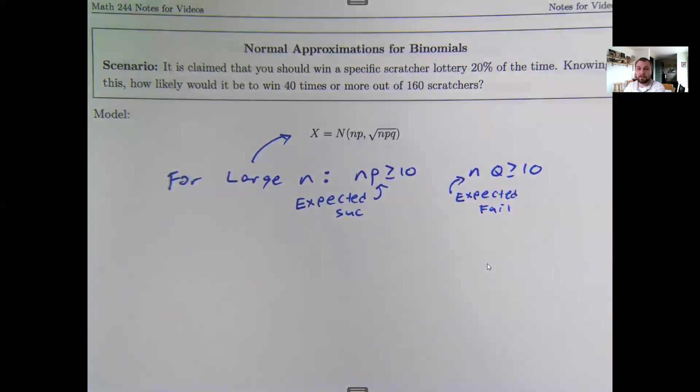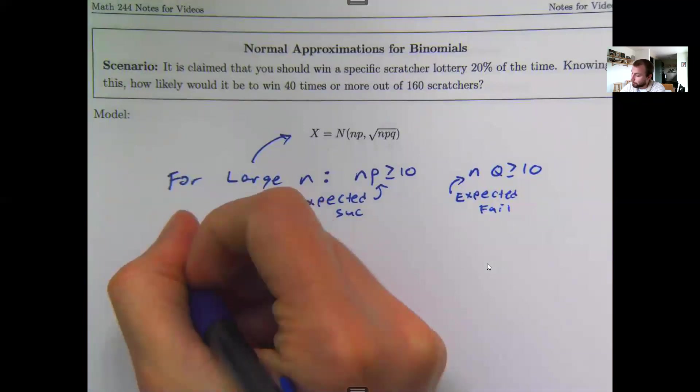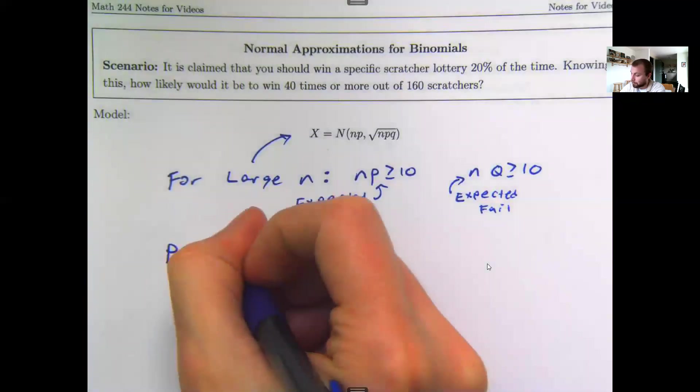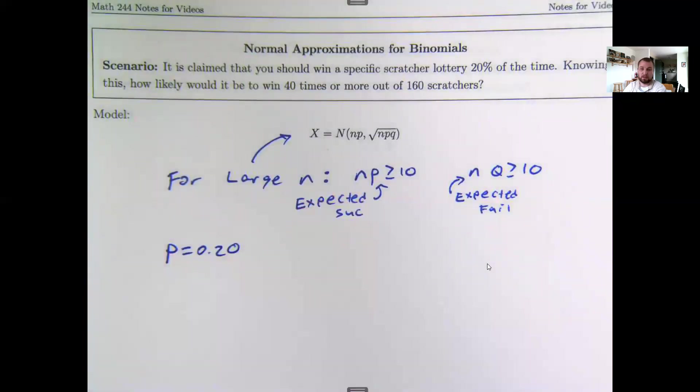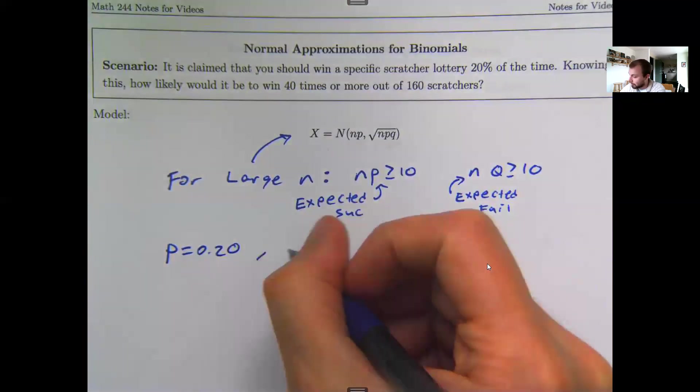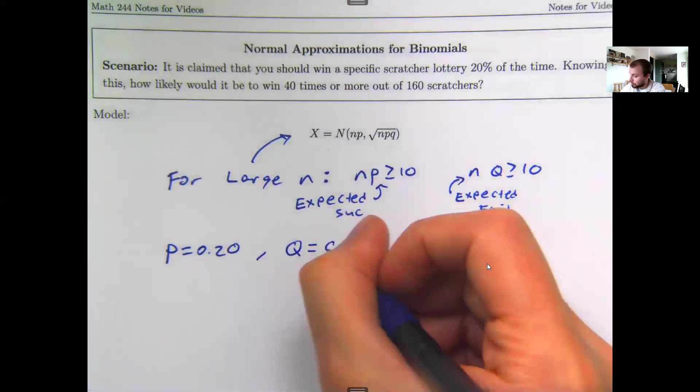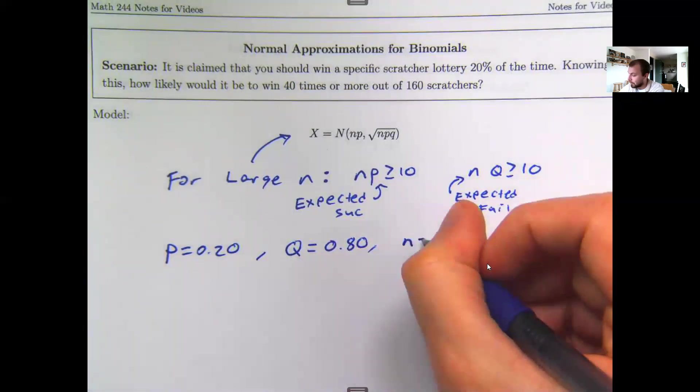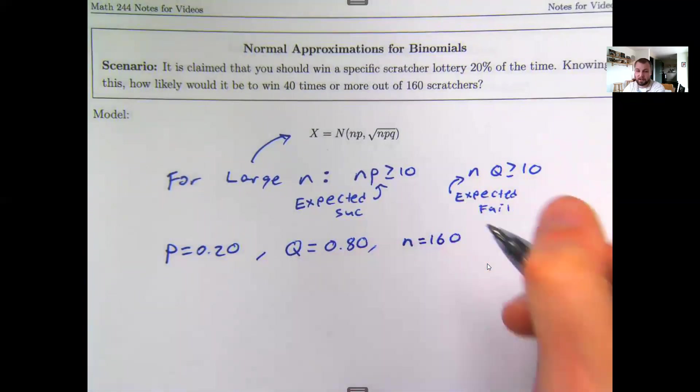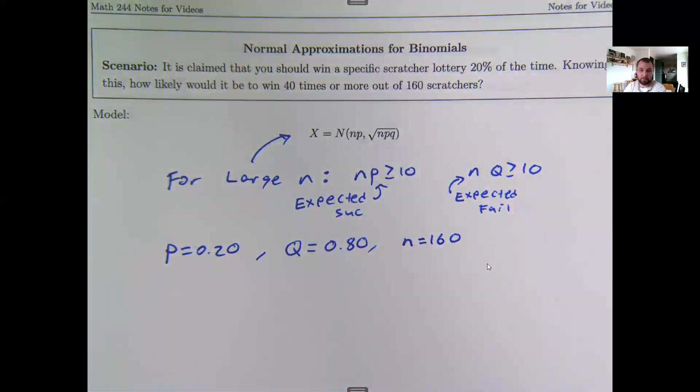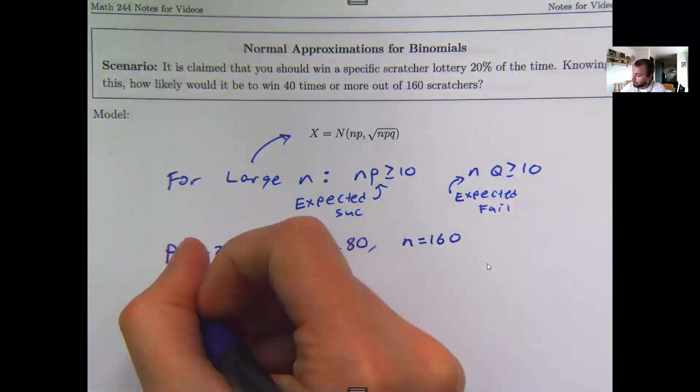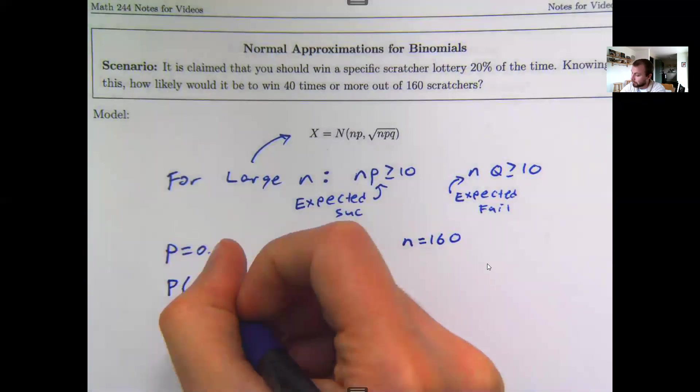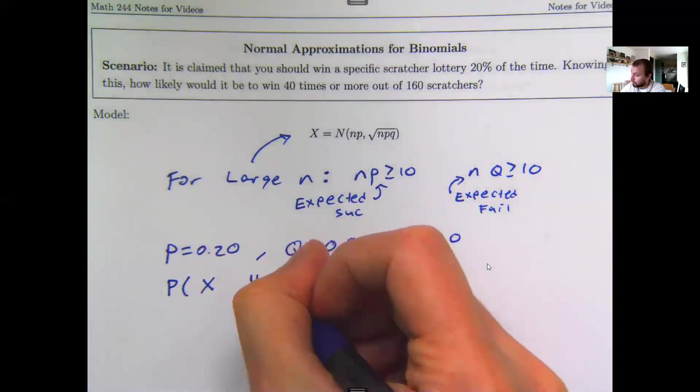Let's list everything that we know. They're telling me the probability that I should win the game is 20%, so this means the probability of losing the game should be 80%. I am playing the game 160 times, so that's my sample size there. And the question is asking me, what is the likelihood that I win, that my count x is 40 or more?